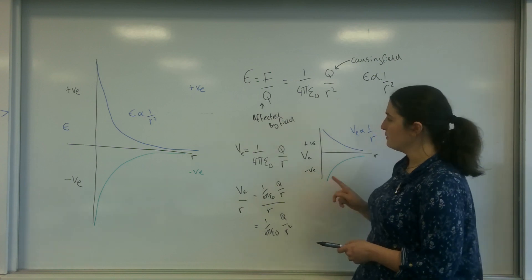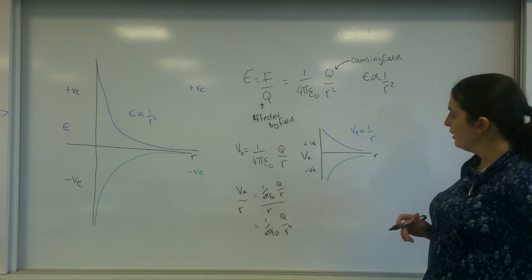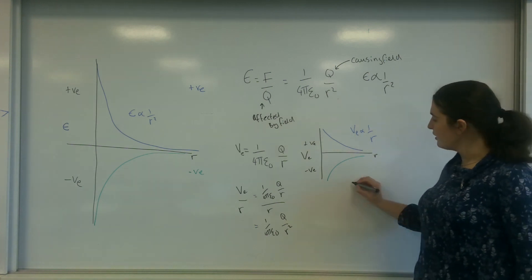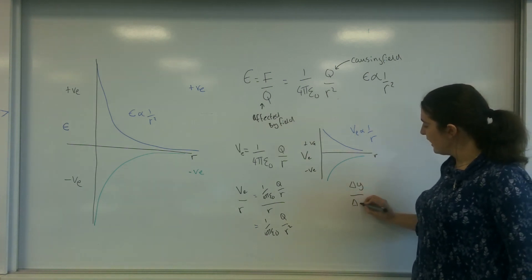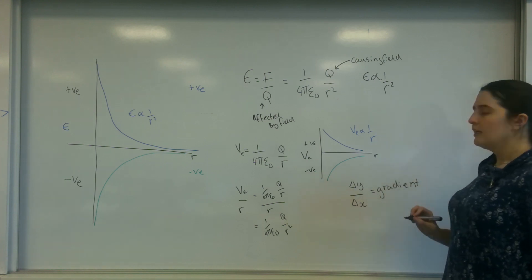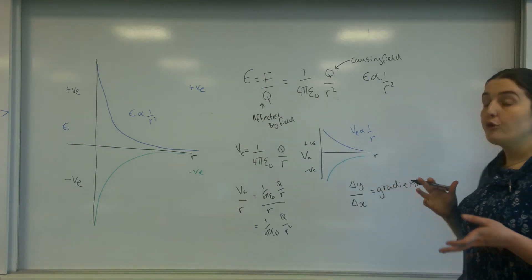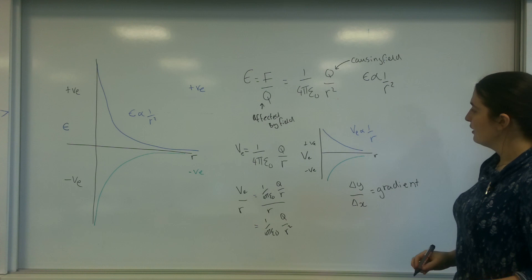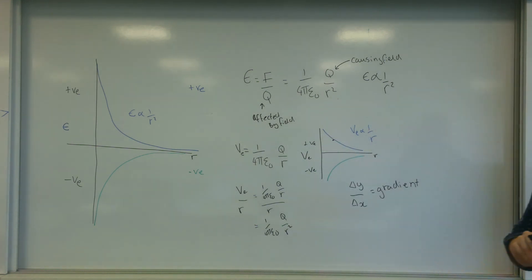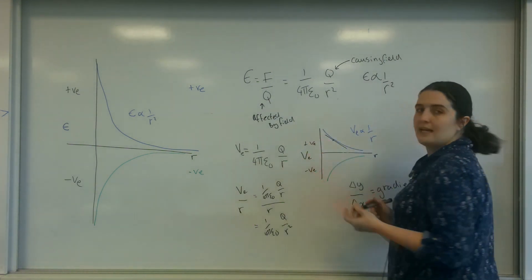This is important, because this actually means from this graph here, this potential r graph, I can actually work out the field strength. Because if I change this up to something you might recognize, the change in y over the change in x equals the gradient. That means here the gradient of this line would be the field strength. So if I took a point here and drew a line, so let's grab a ruler. A lovely tangent like that.